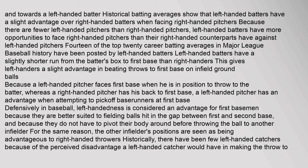Because a left-handed pitcher faces first base when in position to throw to the batter, whereas a right-handed pitcher has his back to first base, a left-handed pitcher has an advantage when attempting to pick off baserunners at first base. Defensively in baseball, left-handedness is considered an advantage for first basemen because they are better suited to fielding balls hit in the gap between first and second base, and because they do not have to pivot their body before throwing to another infielder. Historically, there have been few left-handed catchers because of the perceived disadvantage in making the throw to third base.